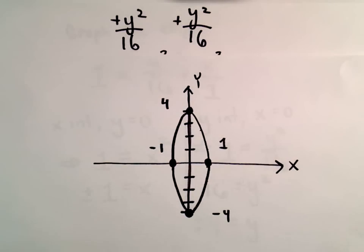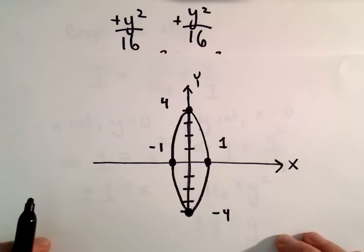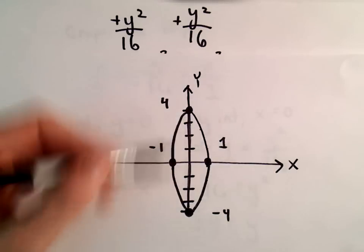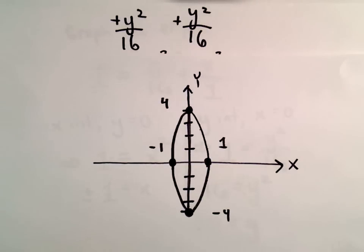But again, decent little rough sketch. To me, when I graph ellipses, this is usually what I do. I just find x and y-intercepts, especially if it's centered at the origin. And usually that way, I have a decent intuitive idea as to what the graph will look like.